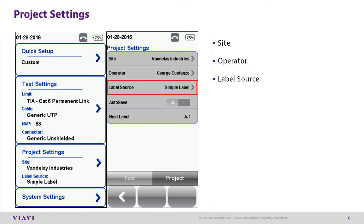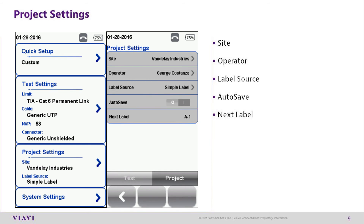Label Source allows you to set up the labeling format to be used for your tests. Labeling is covered in detail in Lesson 4. Auto Save, if enabled, means the certifier will automatically save every passing result with the current label source format. Next Label shows the name of the next label for the current label source format.